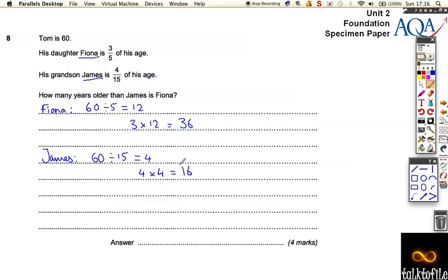So we know that Fiona's 36 and James is 16. Now, how many years older than James is Fiona? Well, we've got to do 36 minus 16, which is equal to 20.